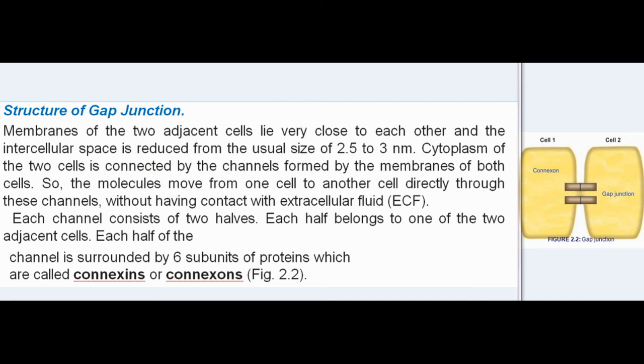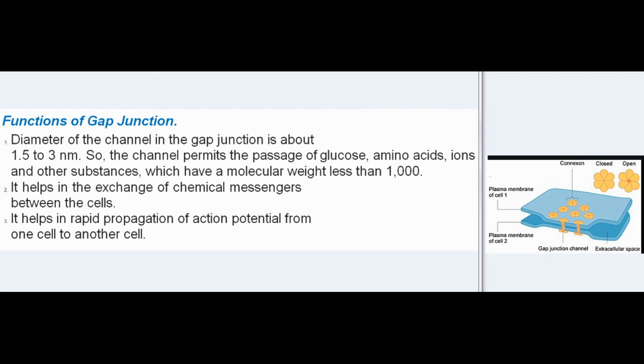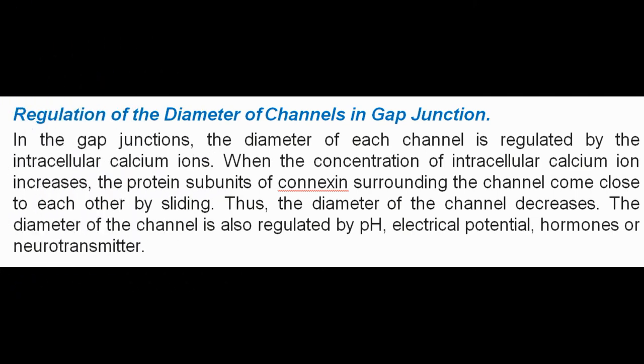Each channel consists of two halves, each half belonging to one of the two adjacent cells. Each half of the channel is surrounded by six subunits of proteins called connexins. Functions of gap junction: The diameter of the channel in the gap junction is about 1.5 to 3 nanometers, so the channel permits the passage of glucose, amino acids, ions, and other substances which have a molecular weight less than 1000. It helps in the exchange of chemical messengers between cells and in rapid propagation of action potential from one cell to another.